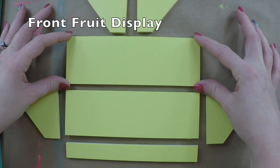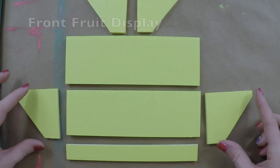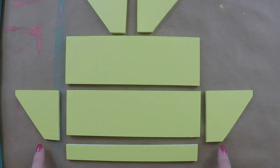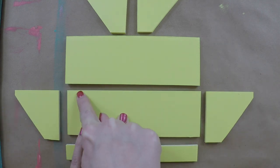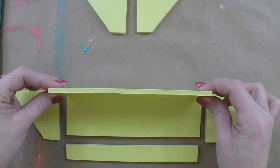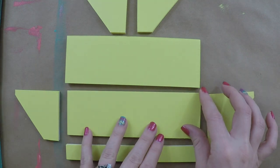For the front fruit display, lay all your pieces out like this, and watch how I attach them. That way you don't attach them the wrong way with the hot glue, because once you glue it together, it's pretty much stuck in place. And be careful with the hot glue.